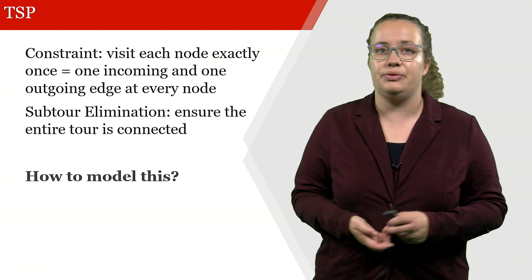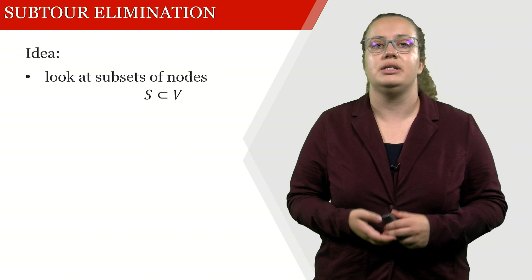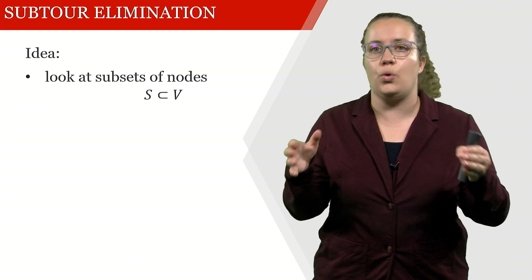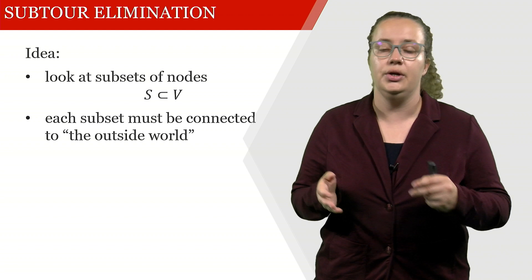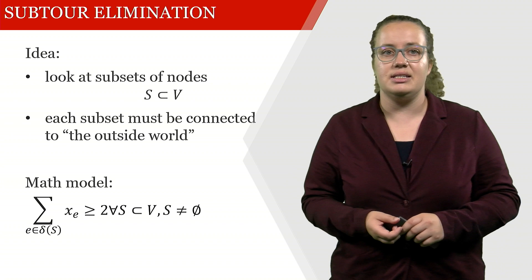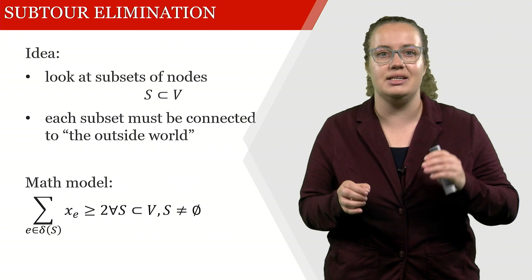When we looked into the Miller-Tucker-Zemlin formulation, we assigned indices to the individual locations but now we're actually going to look into subsets of nodes. In the previous example with those four nodes, a subset of nodes could for example be the nodes 1, 3 and 4, and these nodes 1, 3 and 4 must somehow be connected to the outside world, so to node number 2. The way that we formulate this is that we say the number of edges that go into a set or out of a set, so that connect a set S with not S, has to be at least 2.